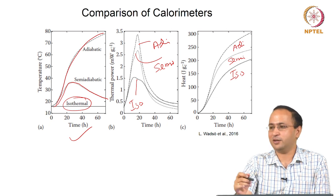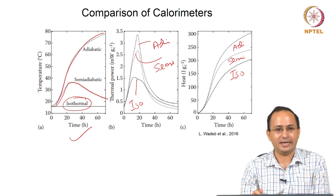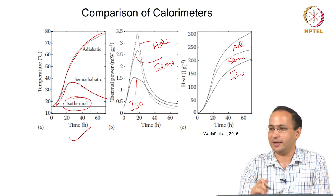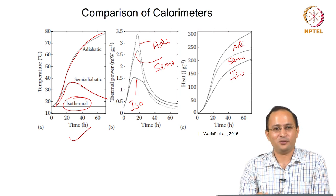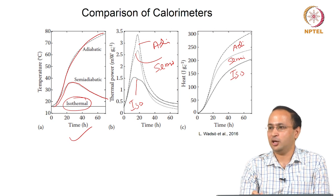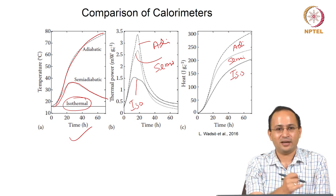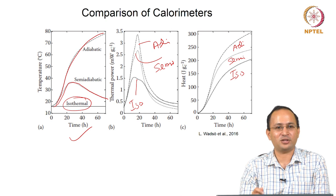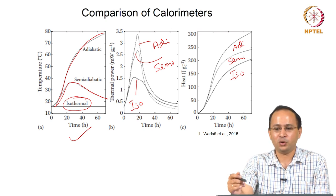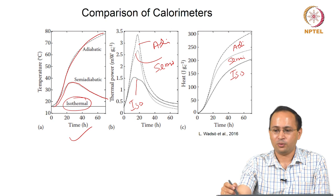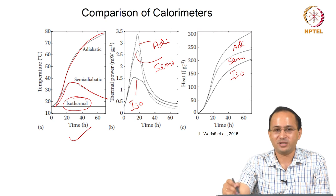The key point is: whenever you use a technique, you need to understand the differences. You cannot simply compare results obtained from adiabatic and isothermal calorimetry — you need to know what the difference is and how large it is.